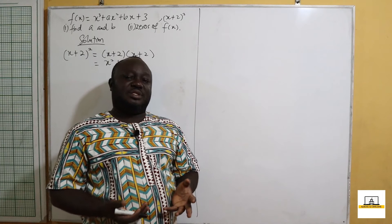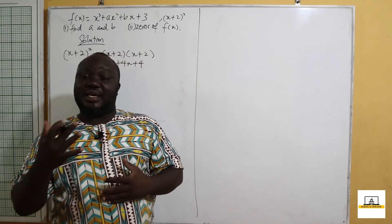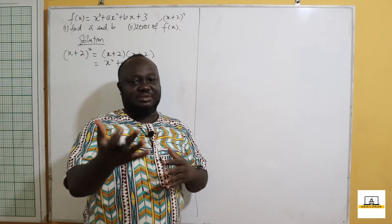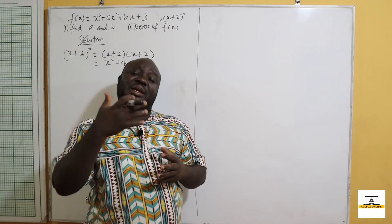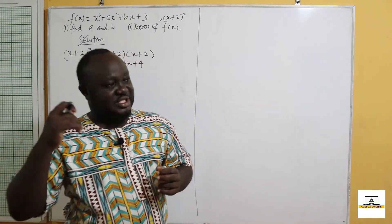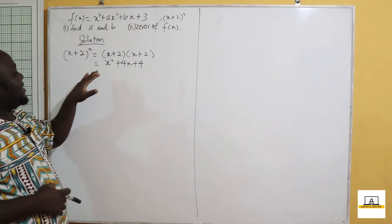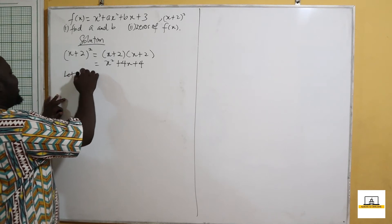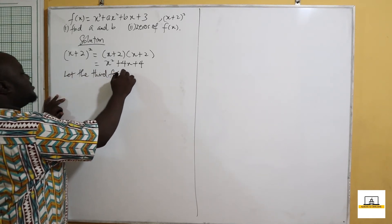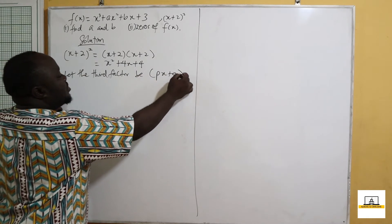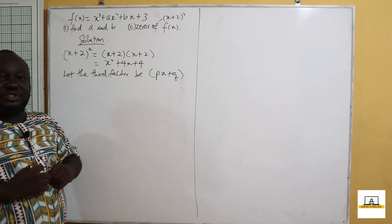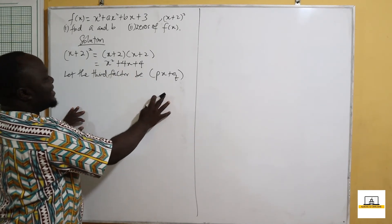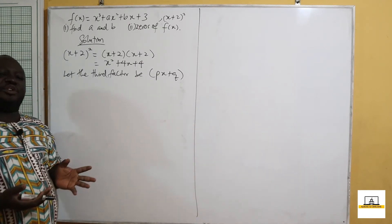Now remember, for a linear function we can write it as ax plus b. A quadratic function will have two linear factors, and a cubic function will have three different linear factors. So in this case, since (x+2)² gives a quadratic factor, we are going to assume there is a third factor which we don't know.